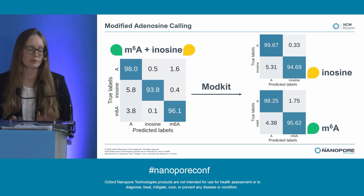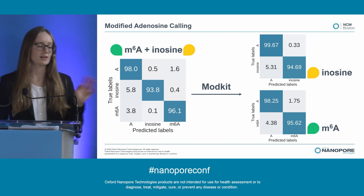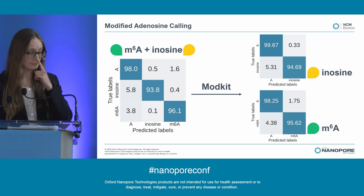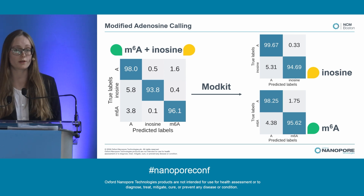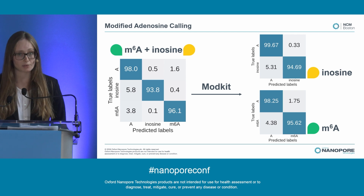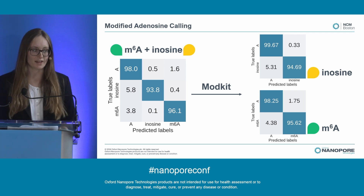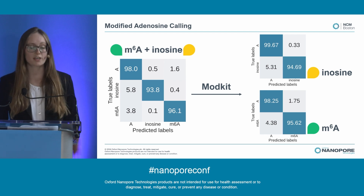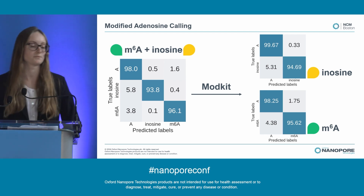There is a bit of subtlety with Inosine base calling: m6A and Inosine are both modifications of the Adenosine base. So we actually only have one mod caller that calls methylated Adenosine, deaminated Adenosine, and canonical Adenosine, and gives you outputs all together. If you wish to do so, you can use mod kit to separate these into just Inosine or just m6A mod calls.